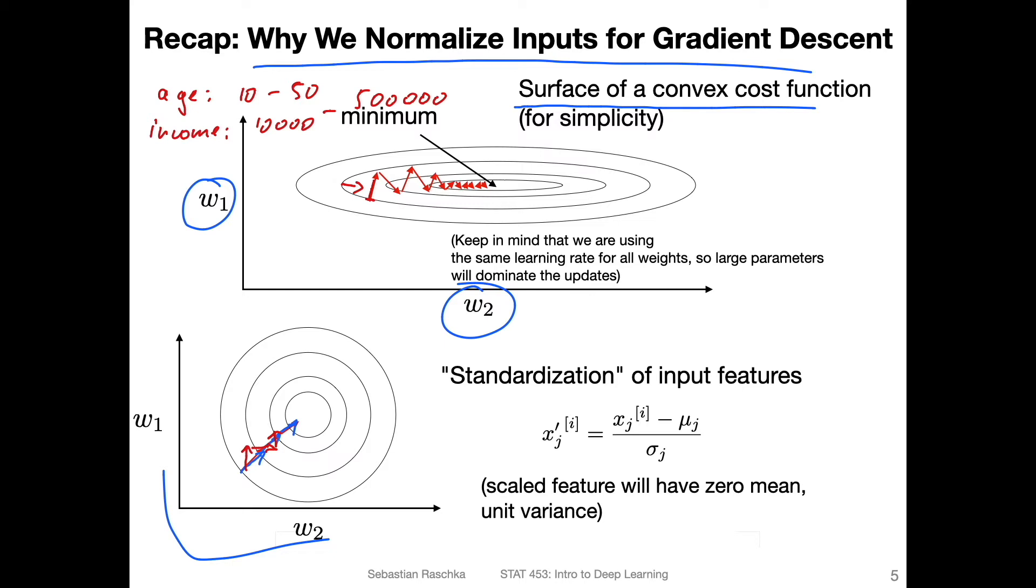And remember how we do gradient descent. So usually, what we do is we have the weight update, let's say weight one, we would update it by weight one minus the partial derivative of the loss with respect to that weight, and then times a learning rate alpha.